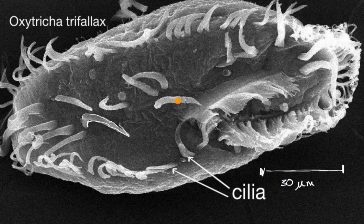These cilia tend to move in unison to either allow the microorganism to move around, or sometimes to move other things around. For example, the cells that line your lungs have cilia that are used to move things up or down — to move saliva or any particles that are in there.